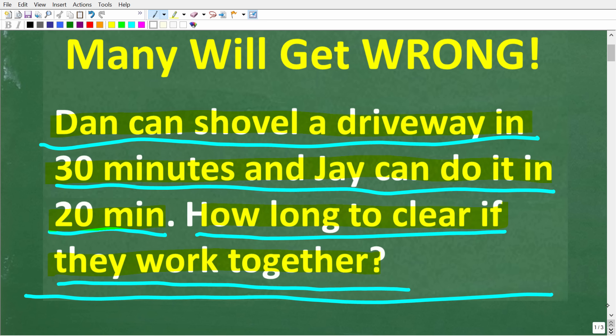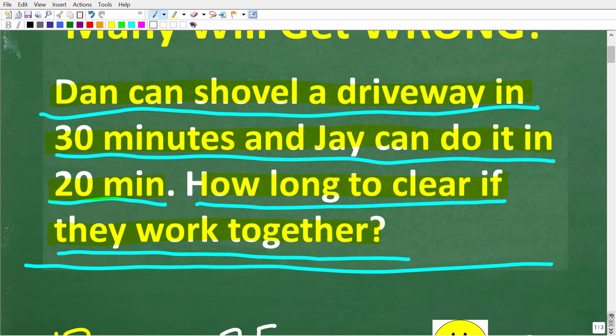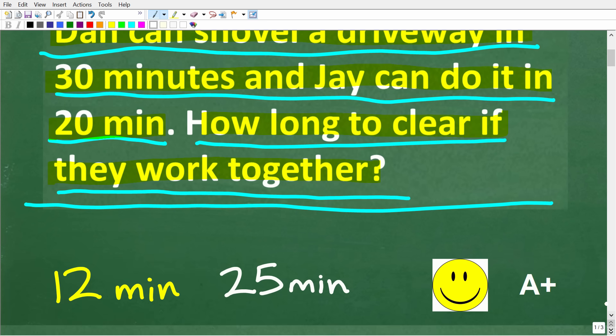Now, before I show you the answer, just try to use some common sense here. So we've got 30 minutes here for Dan and 20 minutes here for Jay. So what do you think the time has to be? So in terms of what is the maximum amount of time for this job to get done? Well, I'm going to show you an answer here that a lot of people put down, and it's totally wrong. You'll see why in just one second. But let's take a look at the correct solution.